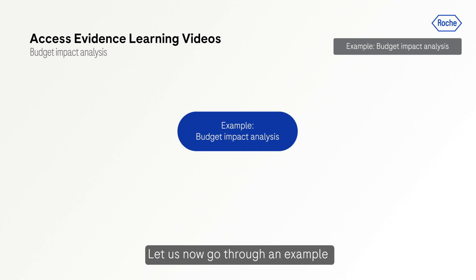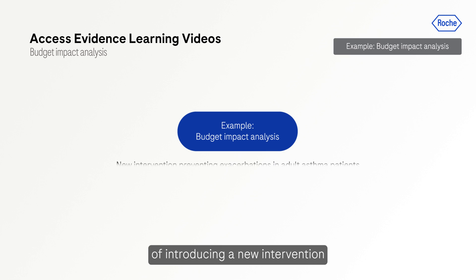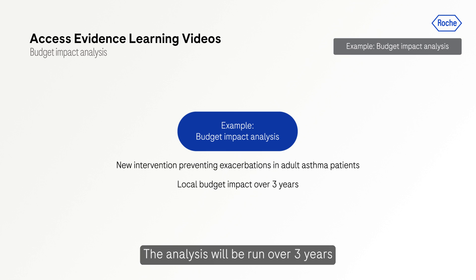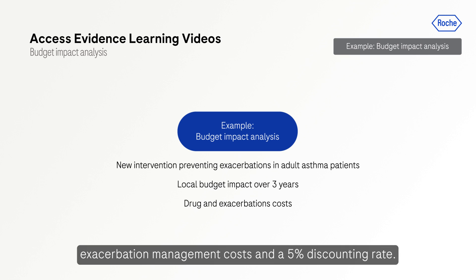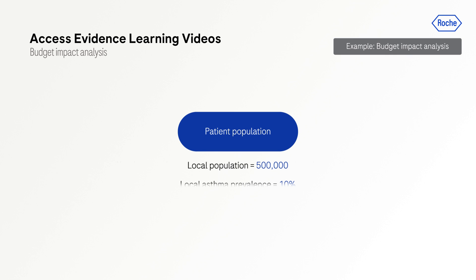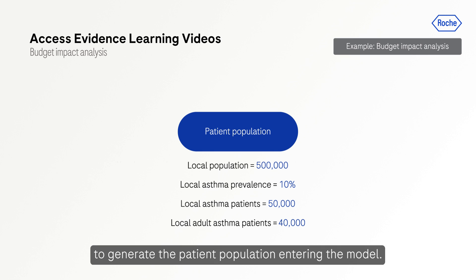Let's now go through an example of a budget impact analysis step by step. The example calculates the budget impact of introducing a new intervention to prevent exacerbations in adult asthma patients. The analysis will be run over three years and takes into account drug acquisition costs, exacerbation management costs, and a 5% discounting rate. For a hypothetical stable local population, a prevalence rate of 10% is used to calculate the total number of asthma patients, and the number of adult patients is then calculated to generate the patient population entering the model.